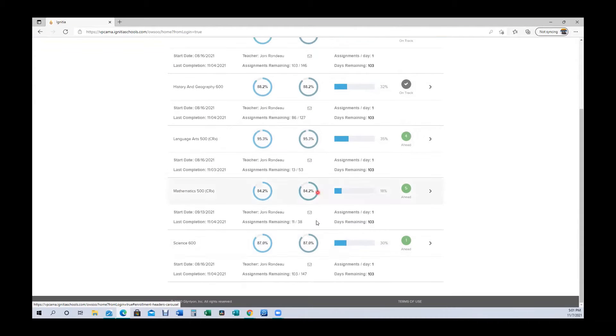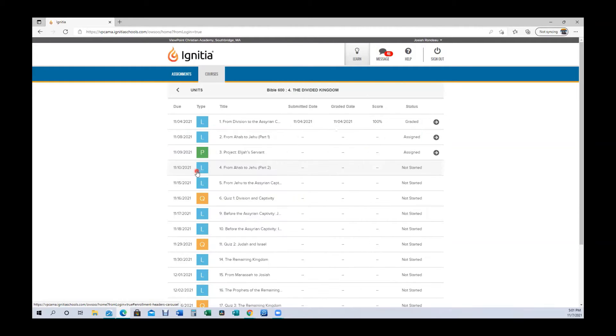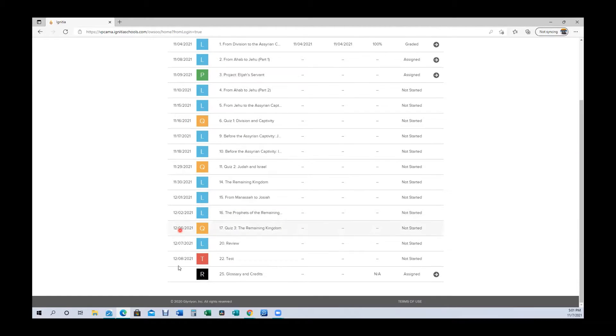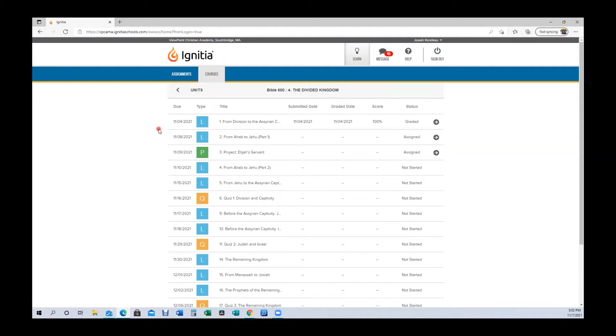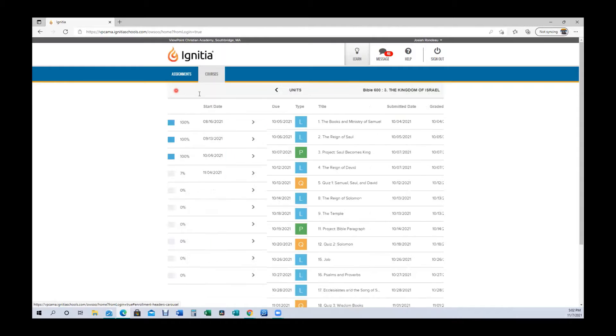Now, the score to date, the current score, the score to date, these are going to match. But I want you to take notice of something right here. Look at this. The assignments remaining. There are 103 out of 146 assignments. And there are 103 days remaining in the calendar year for the Ignition program. What does that tell you? Every day, they're going to do one assignment. This button here tells me if they're on track or if they're ahead. If they were behind, it would be orange or red. Where do you see all this? In the courses view.